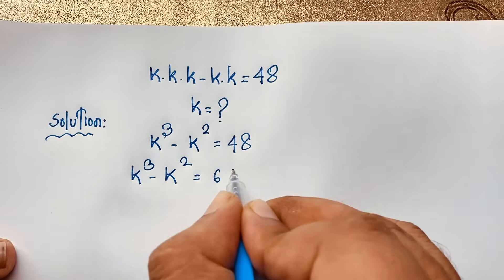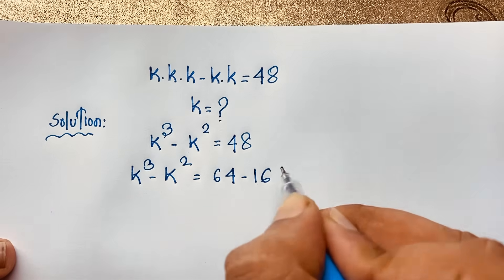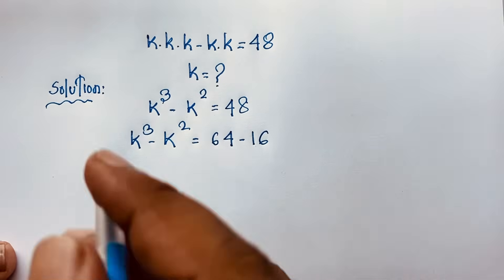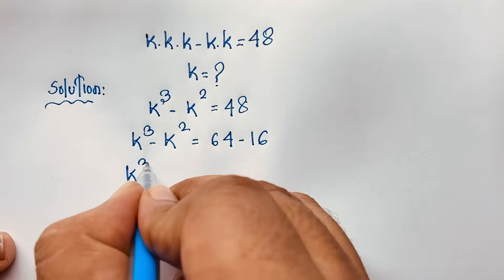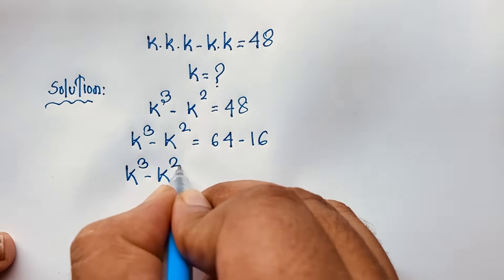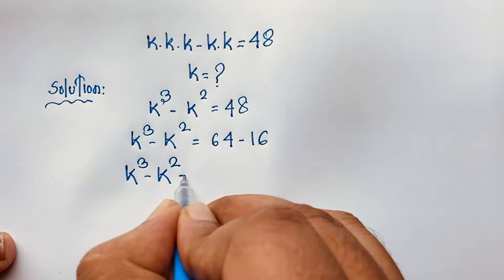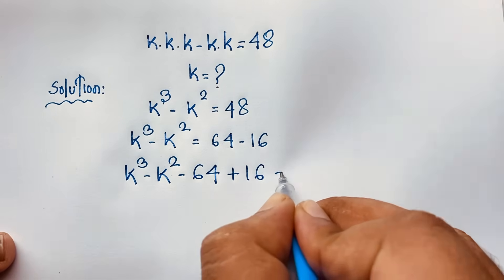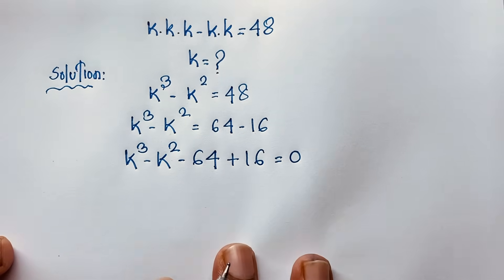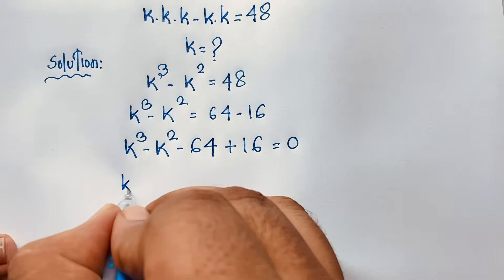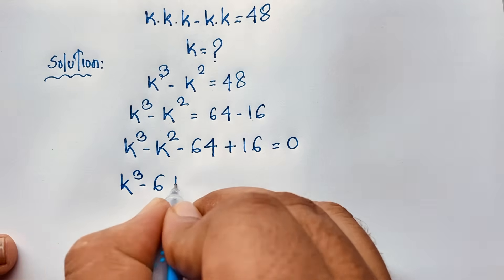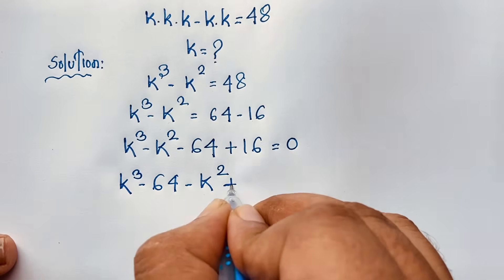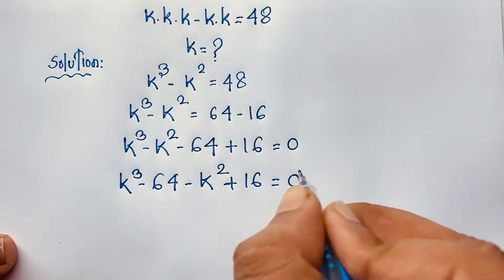Now, 48 can be written as 64 minus 16. So k to the power 3 minus k to the power 2 equals 64 minus 16. If I move the 64 and 16 to this side, they become negative, giving us k to the power 3 minus k to the power 2 minus 64 plus 16 is equal to 0.